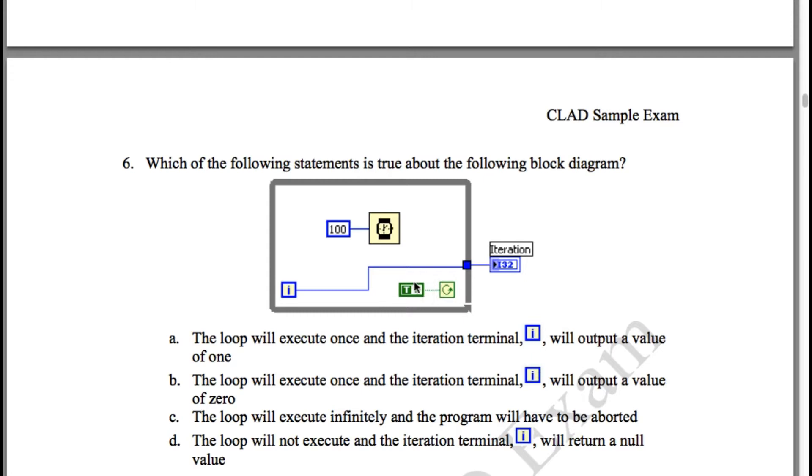Option B: The loop will execute once and the iteration terminal will output a value of zero. That is also false because the loop is going to run continuously.